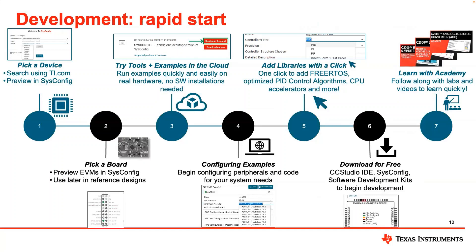Switching gears, this is an overview of what the rapid development flow looks like with C2000. First, finding the right device and EVM can simply be done on ti.com product pages and the SysConfig tool, which is a graphical device and EVM configuration tool that supports pin mux, peripheral initialization, and other functions. We also have cloud-based evaluation and free IDEs for users to start code development without any downloading of software upfront. There are device and application-specific software development kits which allow configuring peripherals or adding different libraries relevant for the application. And finally, we have the C2000 Academy, which is all online and free — a self-paced academy with different software examples and tons of modular training videos to get ramped onto C2000.